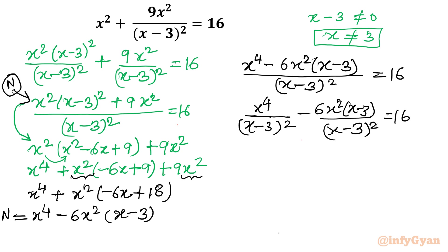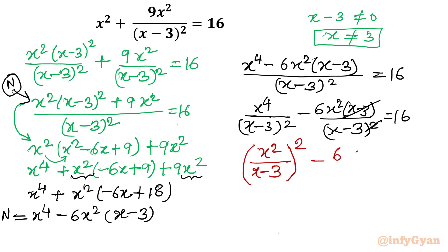I can cancel one factor of (x minus 3) from the second term. The first term I write as x squared over (x minus 3), whole squared. Then minus 6 times x squared over (x minus 3). I also bring x minus 3 to the left side with minus 16 equal to 0.